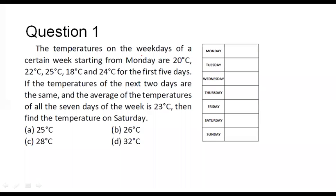We know that there are seven days in a week. Also, we know that the average of a set of observations is equal to the sum of observations divided by the number of observations.